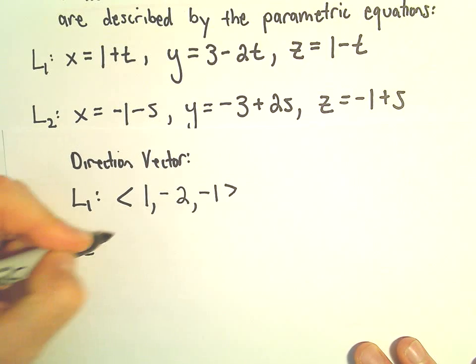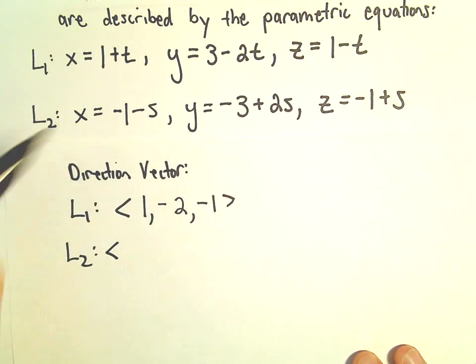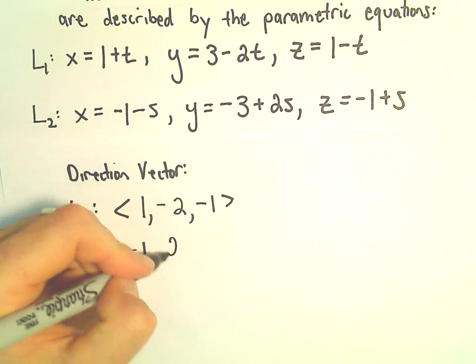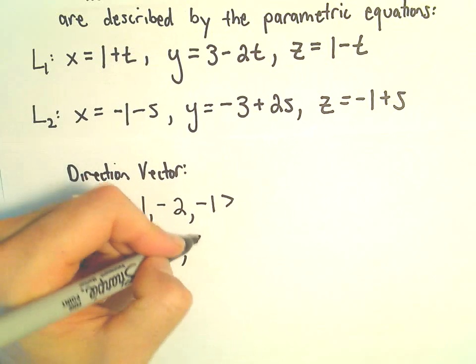For our second line, we'll do the same thing. Now we'll look at the coefficients on s. So we have negative 1, we have positive 2, and then we have positive 1.